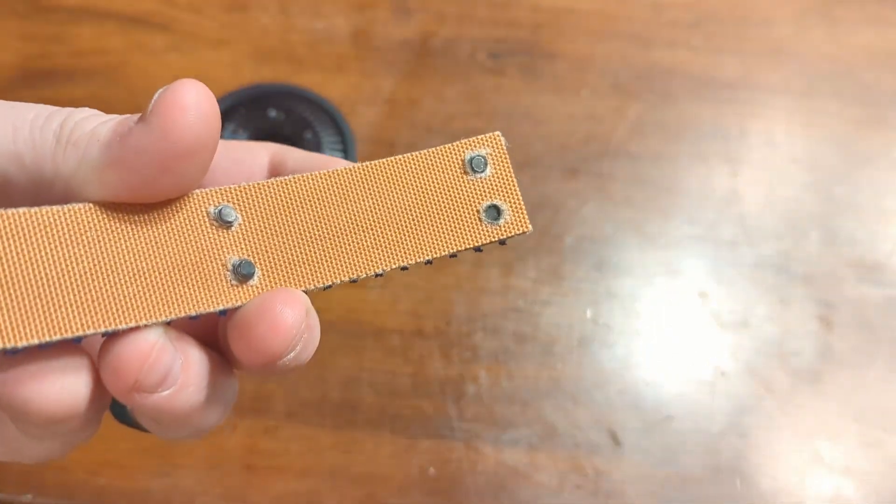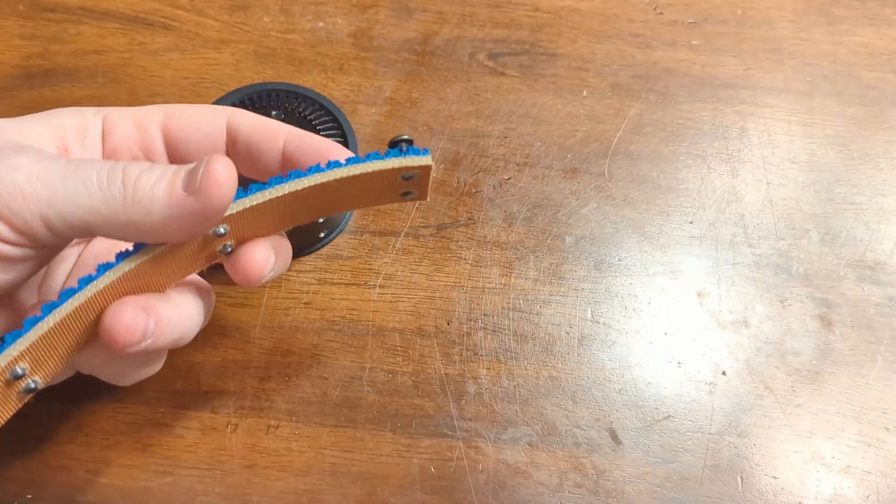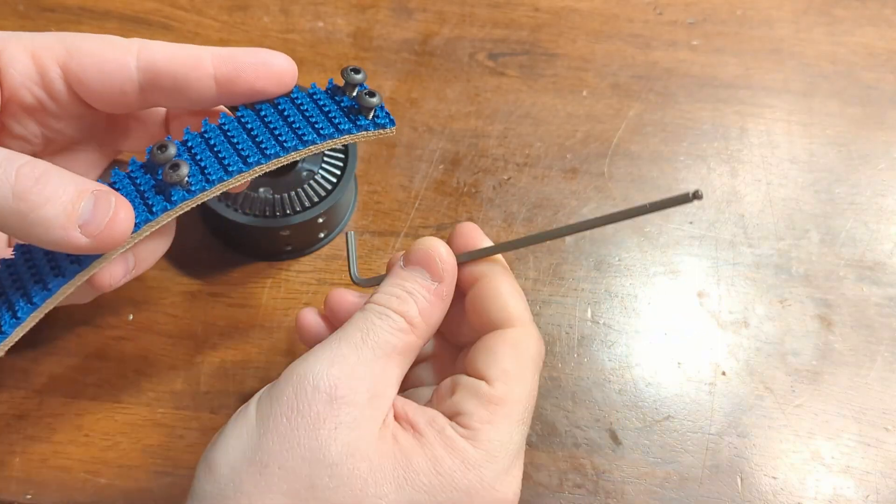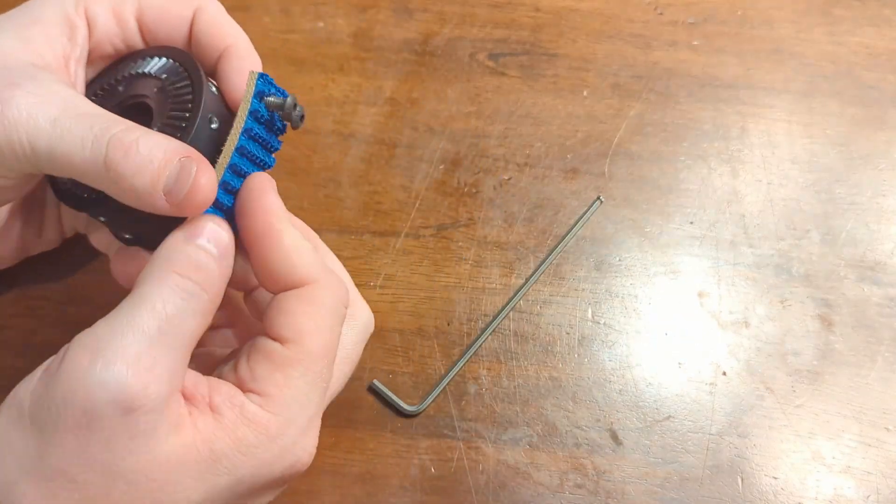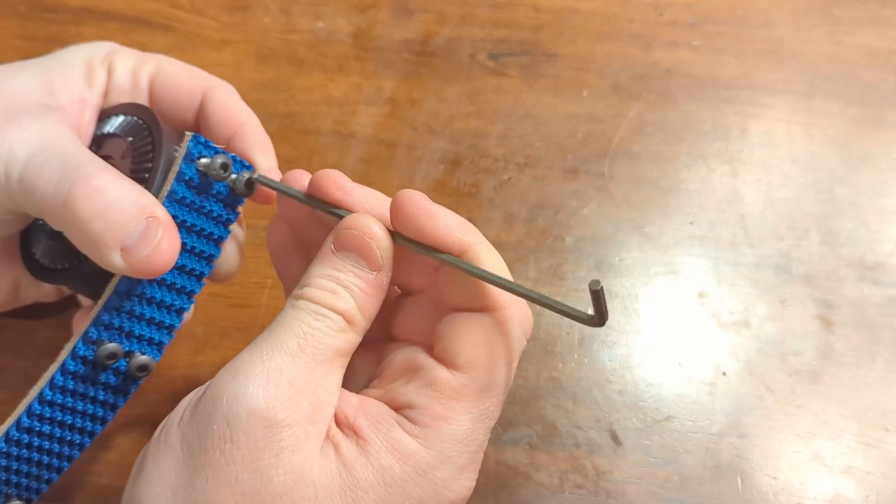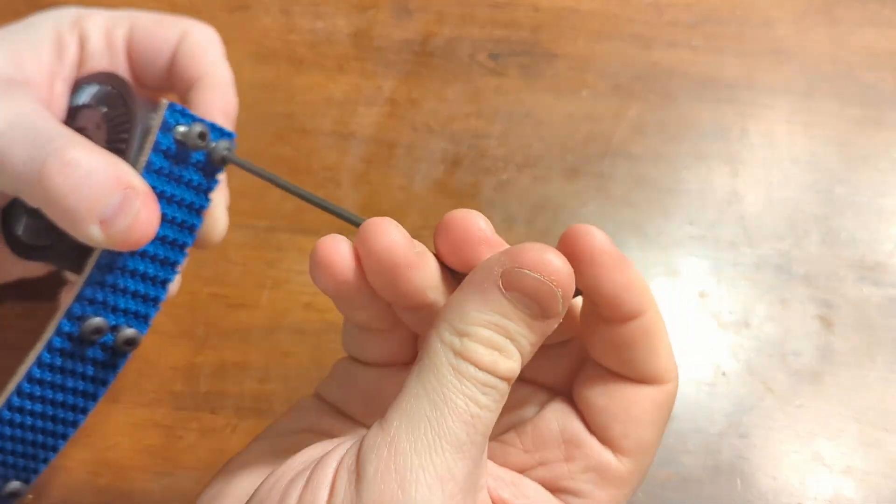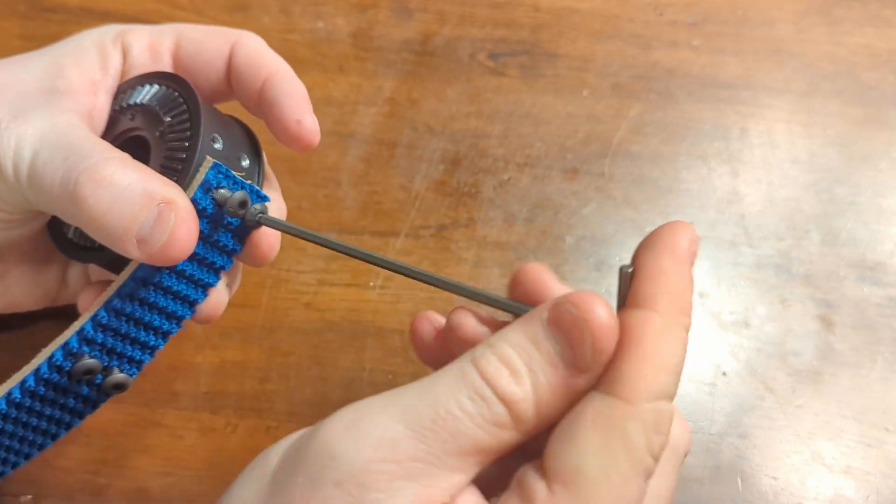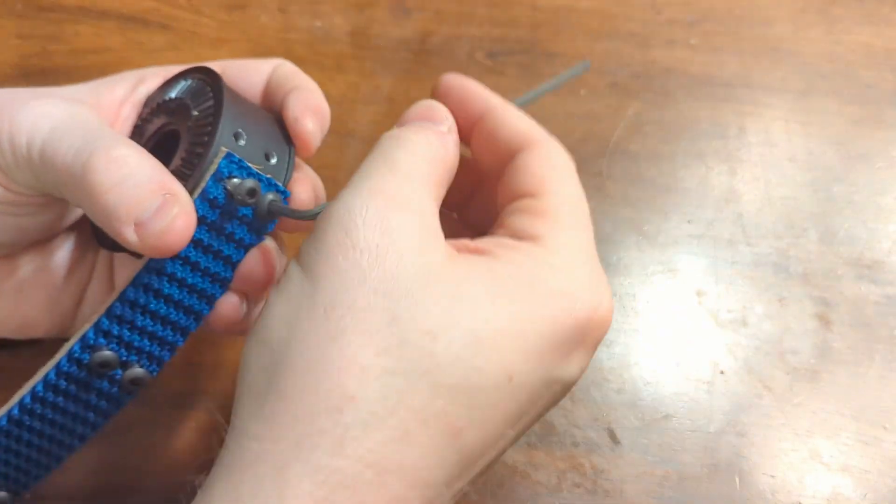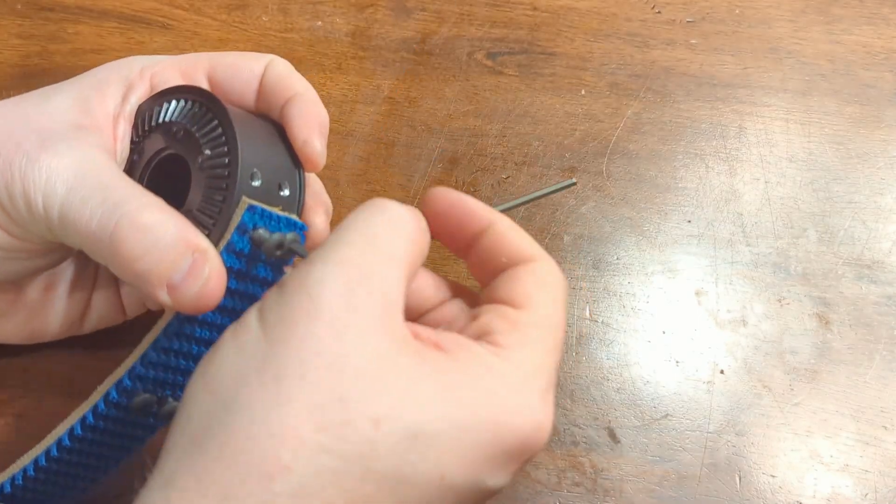So for attaching the tread you'll want to put the 1032 button heads in there. I like to use an Allen wrench, either a T-handle or an L, just so you can feel the threads catching the wheel itself. If you use a electric screwdriver or drill you may just end up ruining the threads if it's not going in straight. So it's definitely a feel thing.